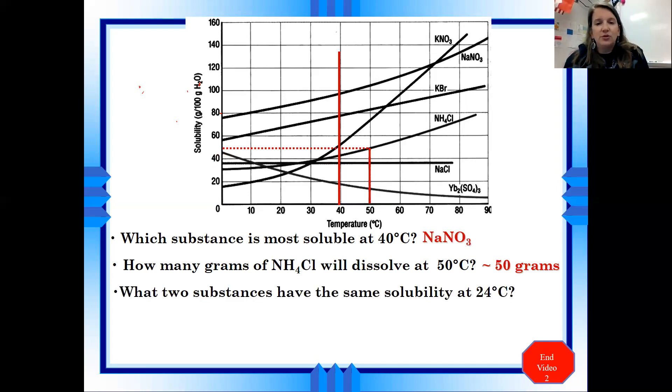We could ask a question like this. What two substances have the same solubility at 24 degrees? So again, we're going to go to 24 degrees. We're going to go to that line and see which substance has two lines that cross at that, or I guess which two substances cross paths at 24 degrees.